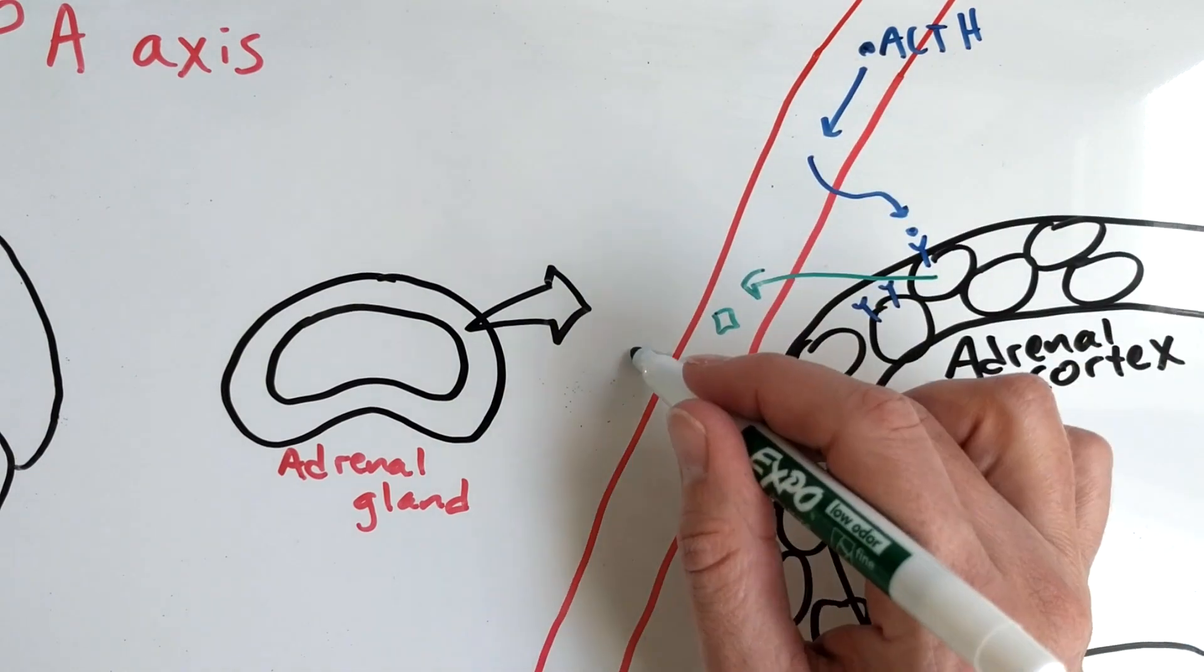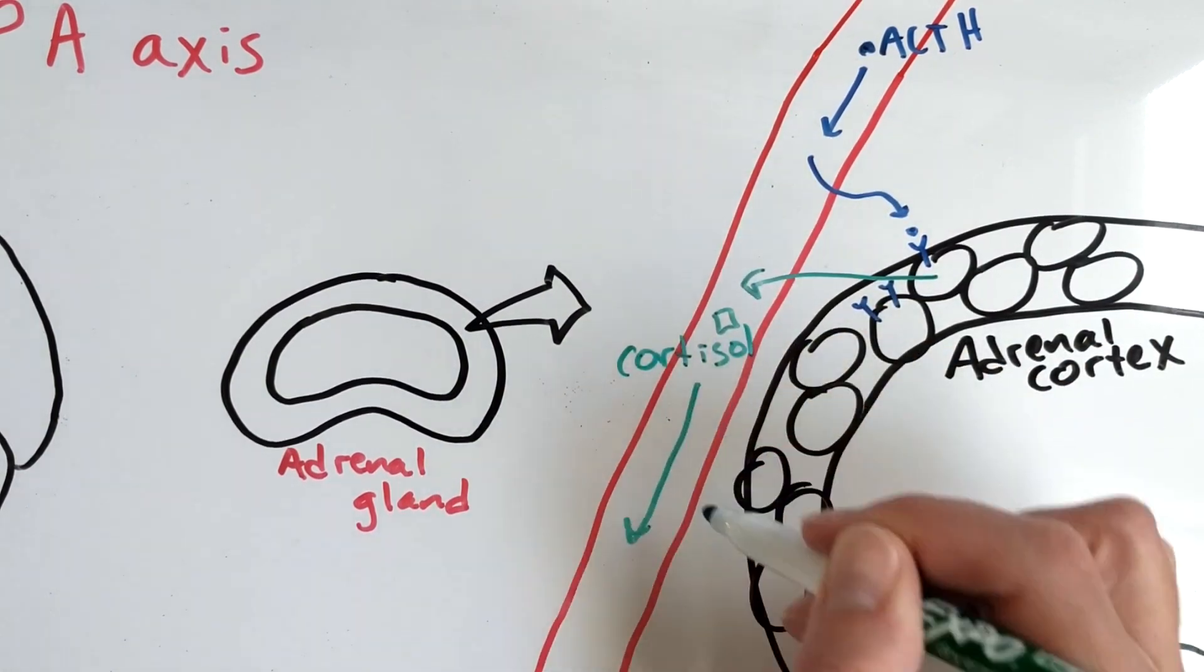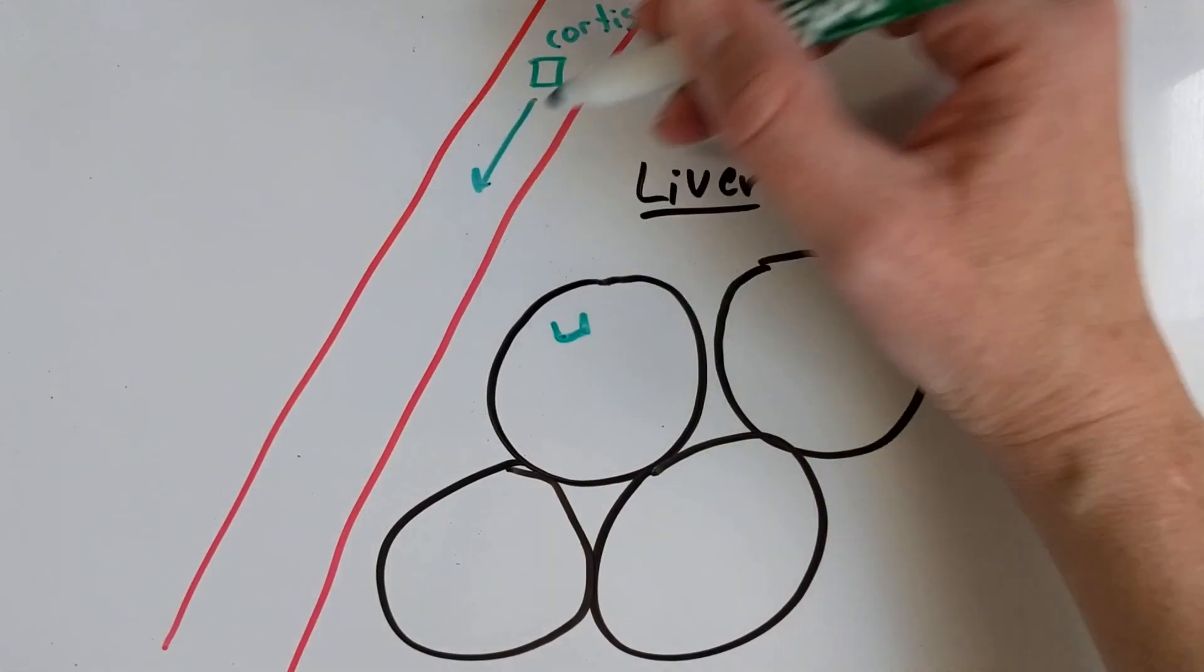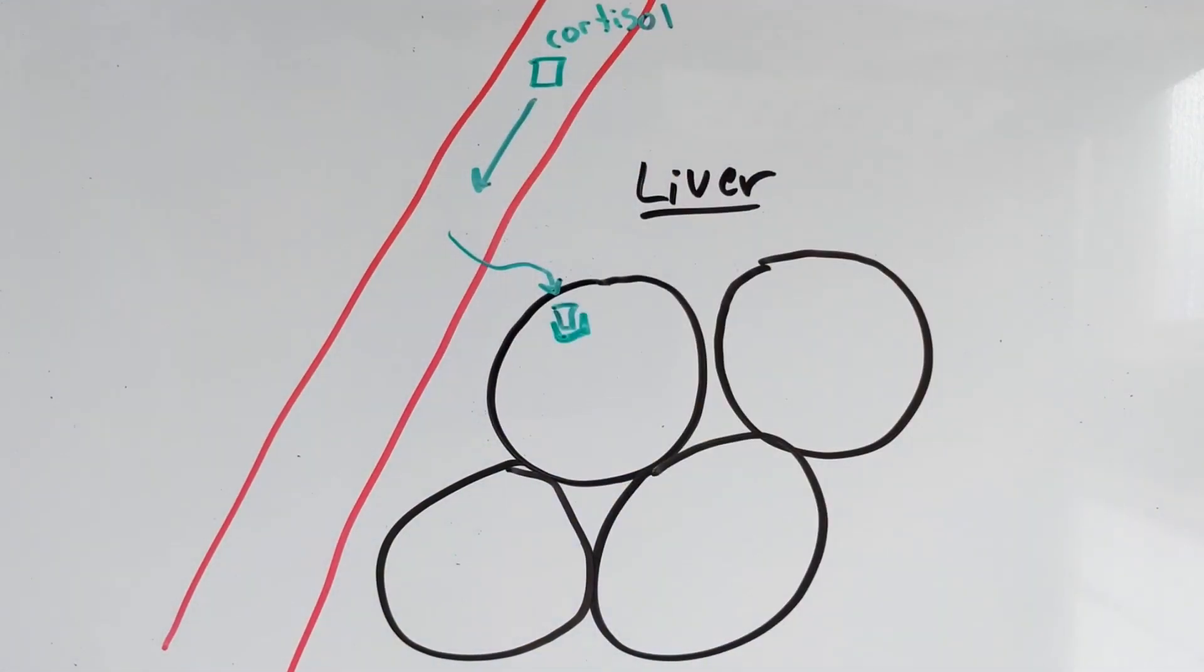ACTH stimulates the synthesis and release of cortisol, a steroid hormone.